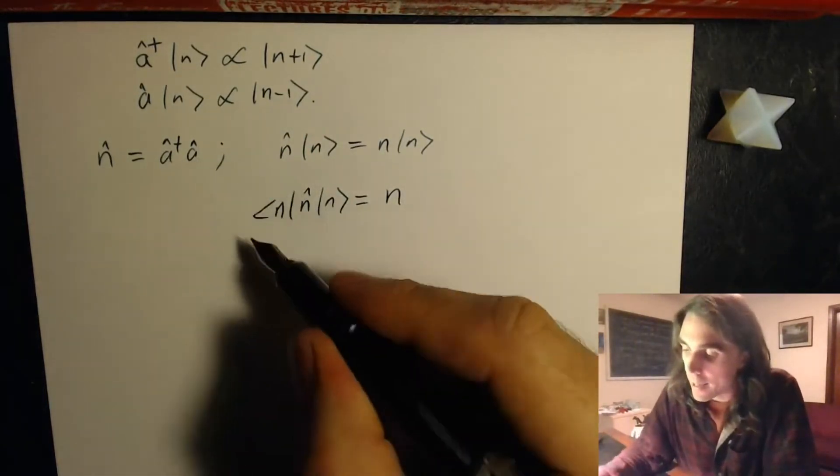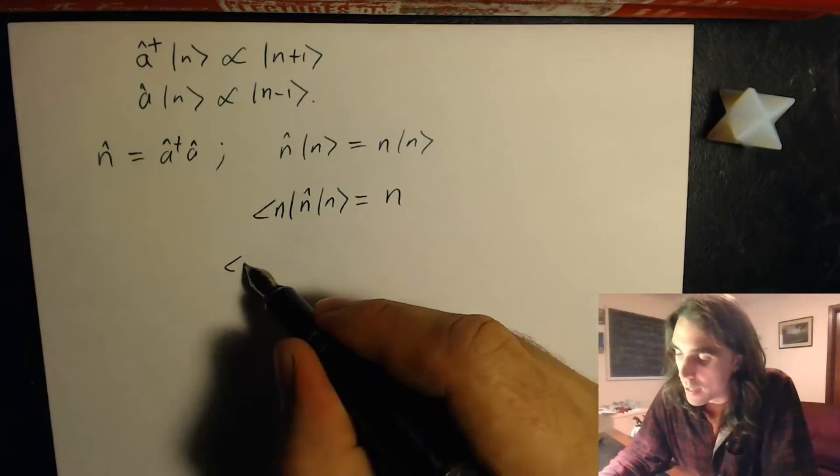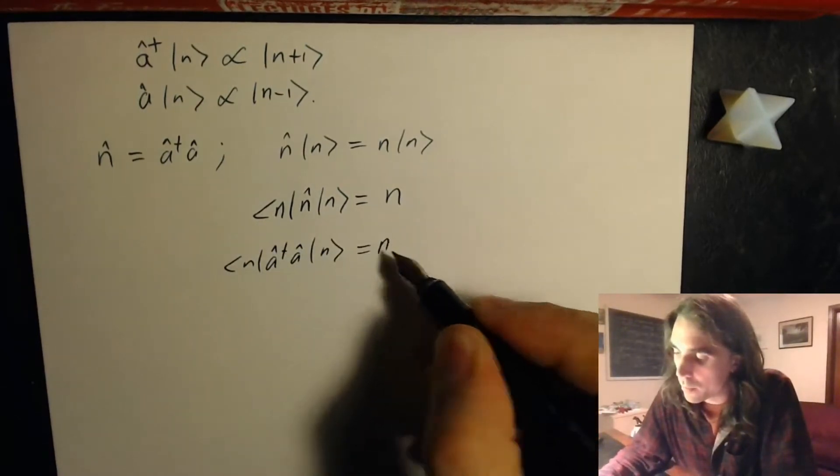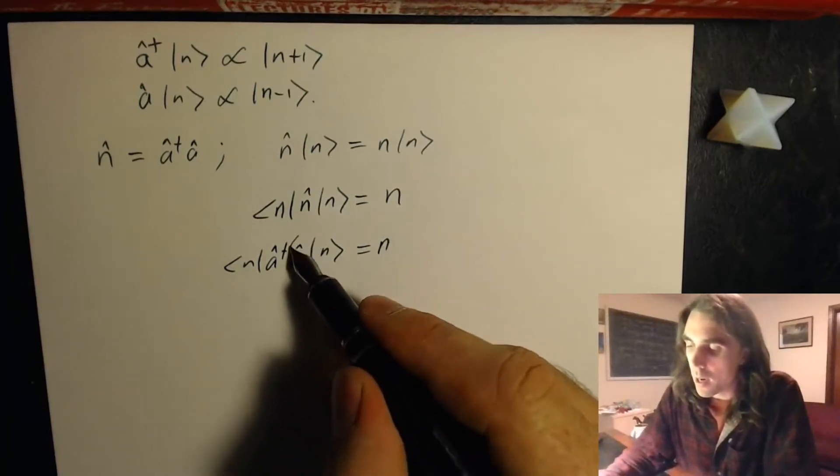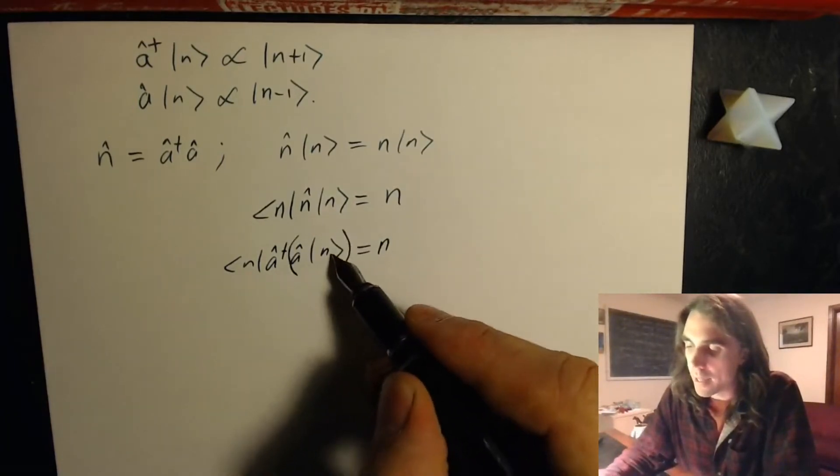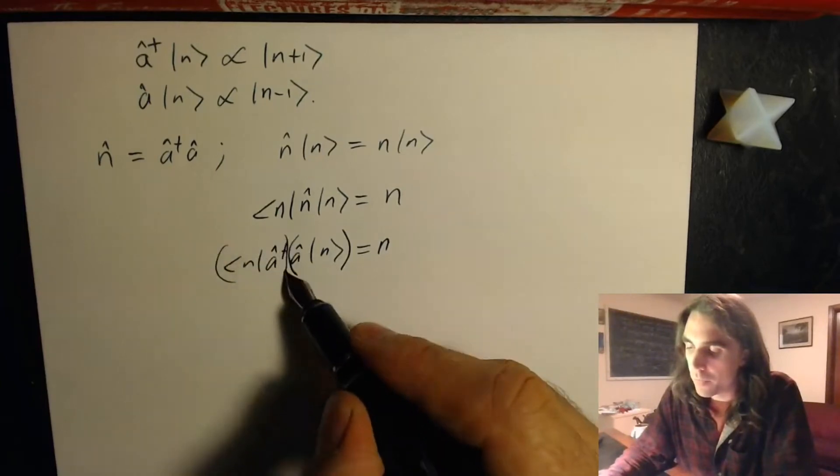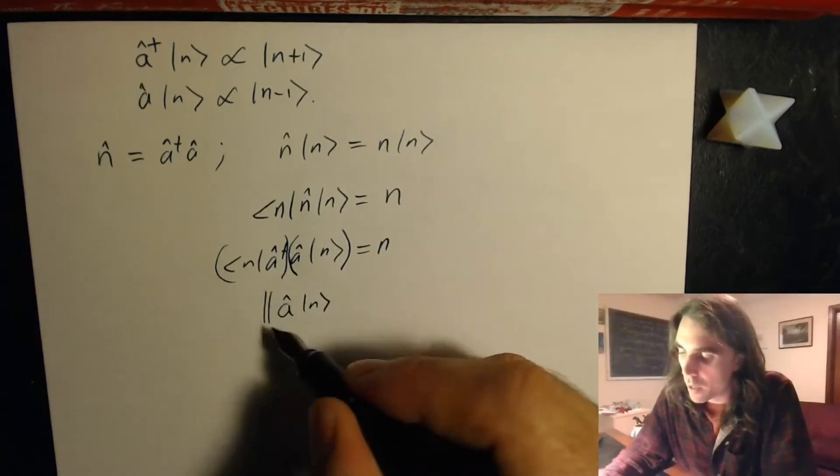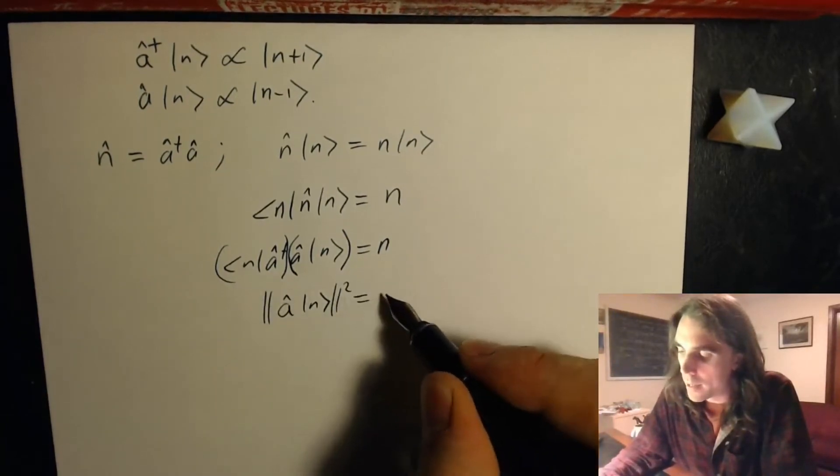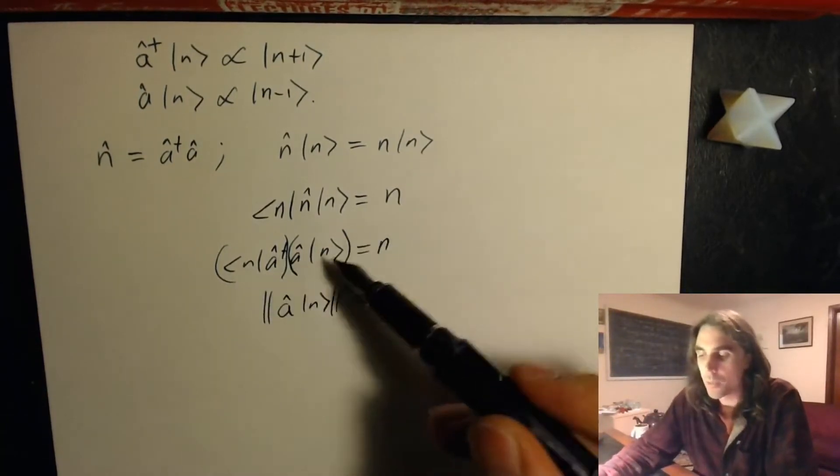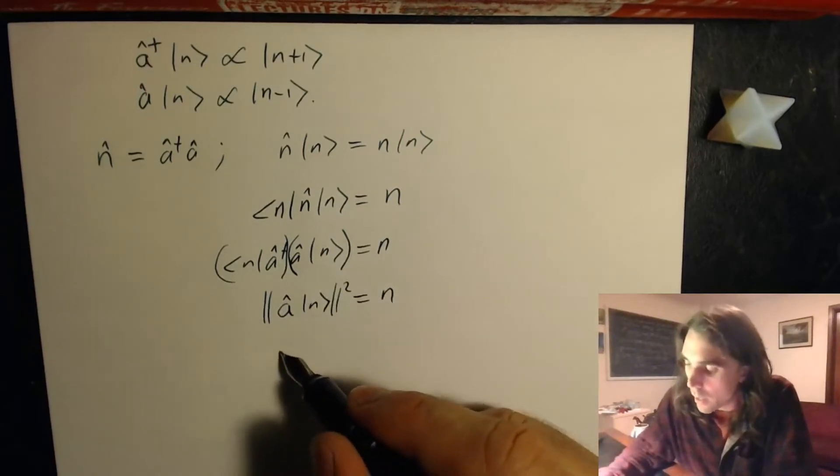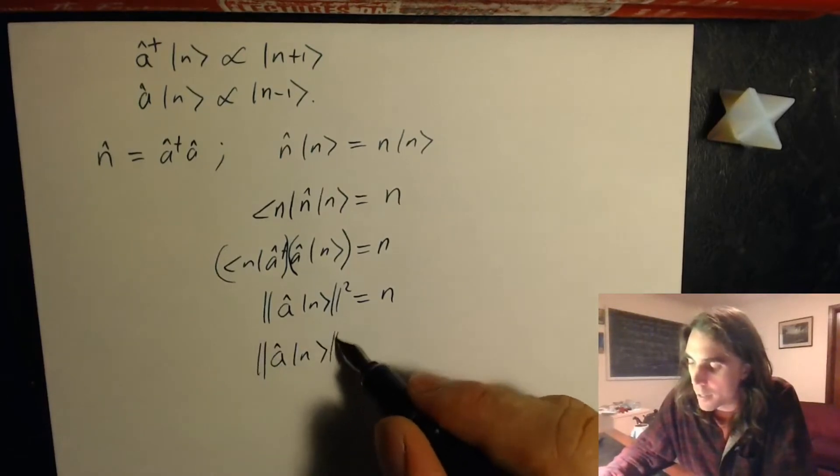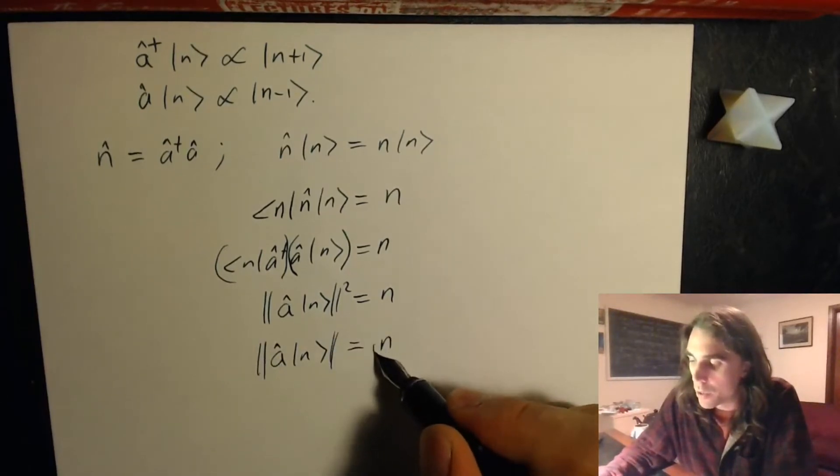But n is a dagger a, so this is n a dagger a n is equal to n. But then if we look at this, this is a acting on n, and this is the Hermitian conjugate of it. And so we have that a acting on n modulus squared is equal to n, because that's just what this expression here says. And so we have the length of the vector a acting on n, as given by the norm, is just equal to the square root of n.